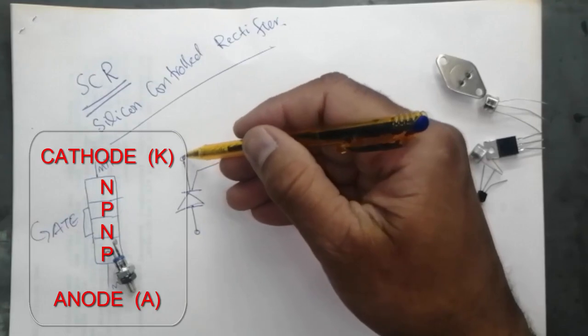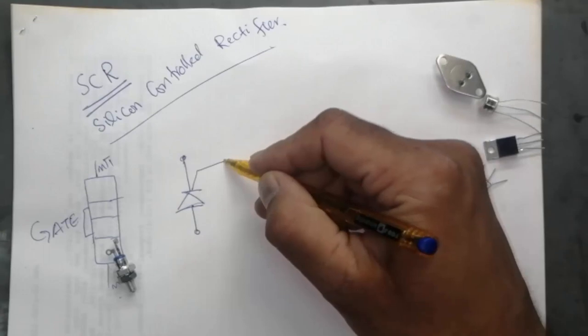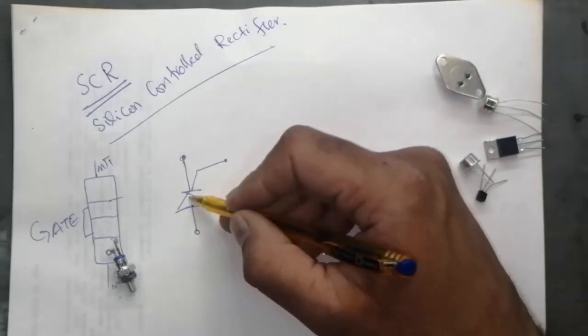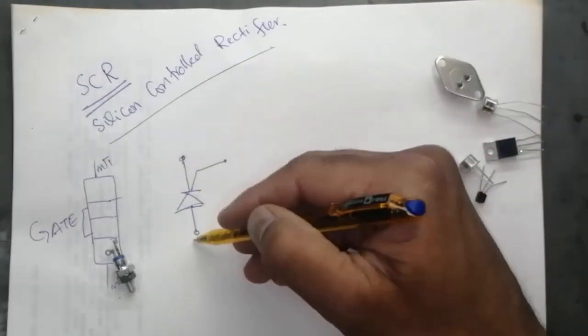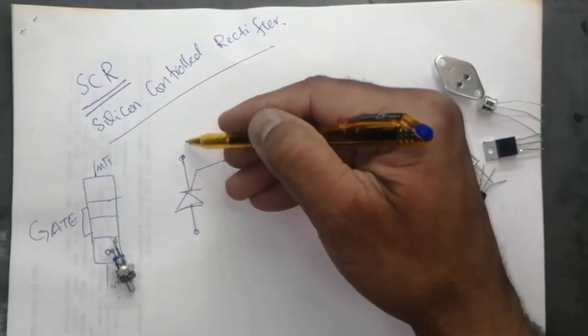Normally the supply is connected on these two terminals. Until any signal arrives here, it makes conduction. When it is conducted, after that it becomes as a short circuit, becomes as a closed circuit, becomes as a switch.